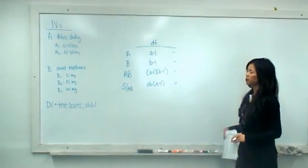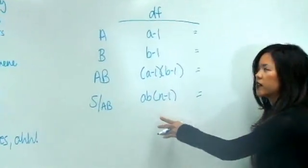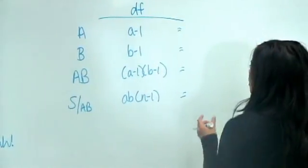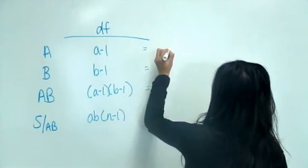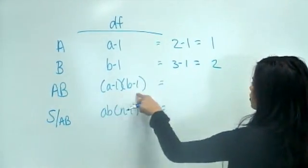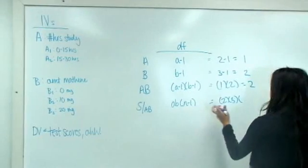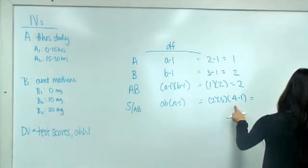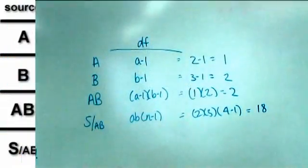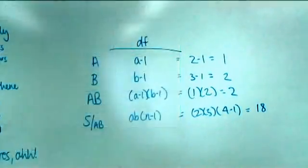Next in our source table are degrees of freedom — formulas you want to memorize to save your life on a hand-calculation test. For A, we have two groups: 2 minus 1 = 1. For B, three groups: 3 minus 1 = 2. The AB interaction df is 1 times 2. The within df is A times B times n — that's 2 times 3 times 4.